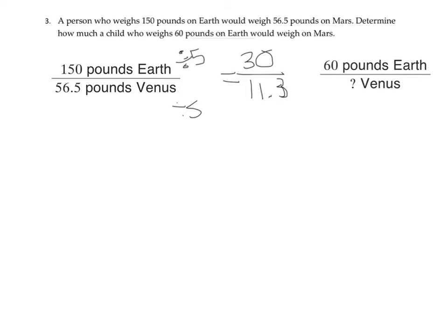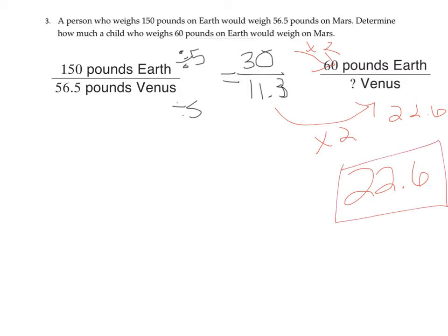Now that I have this equivalent ratio, it's easier to see that 30 times 2 equals 60. So I need to do 11.3 times 2, which gives me 22.6 pounds on Mars.